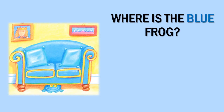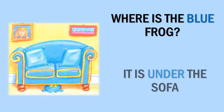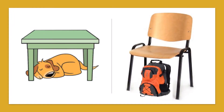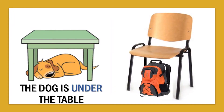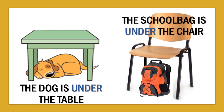Finally let's focus on this part. Can you see the blue frog? So where is the blue frog? It is under the sofa. Can you repeat with me? Here are some examples. The dog is under the table and the school bag is under the chair.